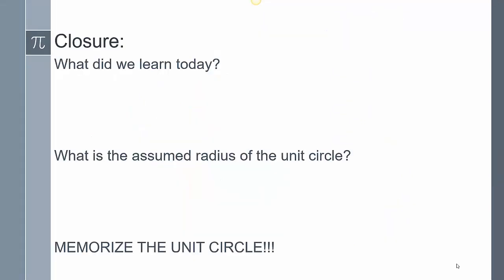To close today's lesson: we talked about the unit circle. We took the 45-45-90 and the 30-60-90 triangle and placed them on the unit circle, so all the reference angles for 30, 45, and 60 degrees were mapped on the coordinate plane. The assumed radius of the unit circle is 1 — that's really important. Please memorize the unit circle; anything we use it for from now on will rely on it. I went over the ways to help memorize it — if you need to re-watch, do it. If you have any other questions, please leave them in the comments.